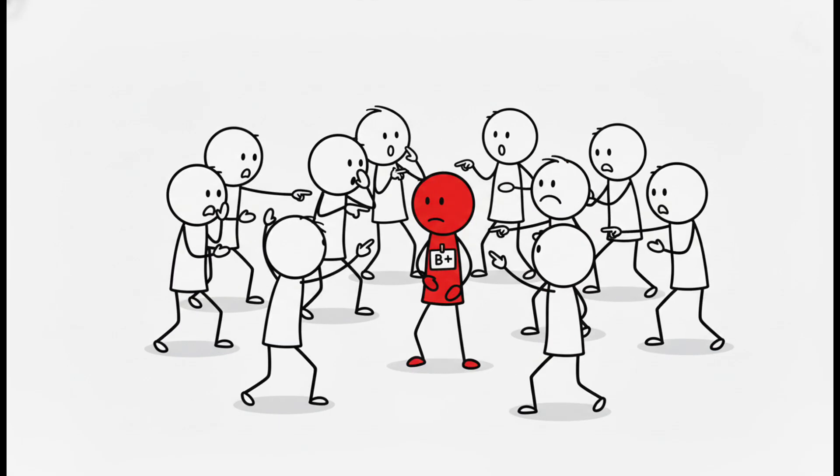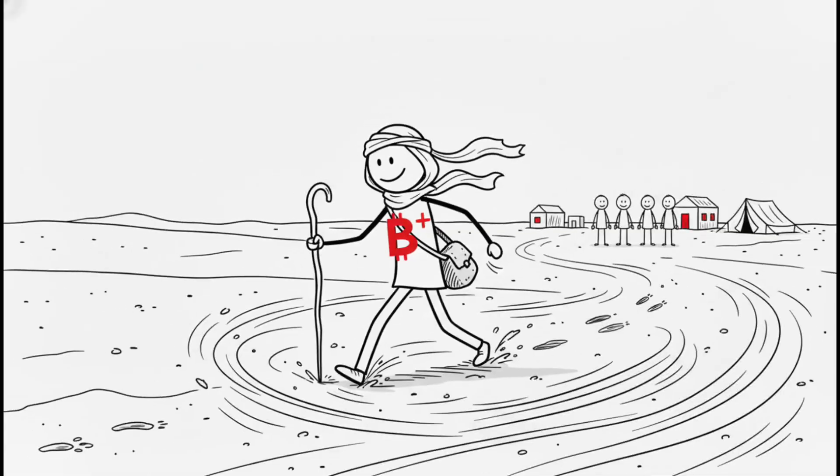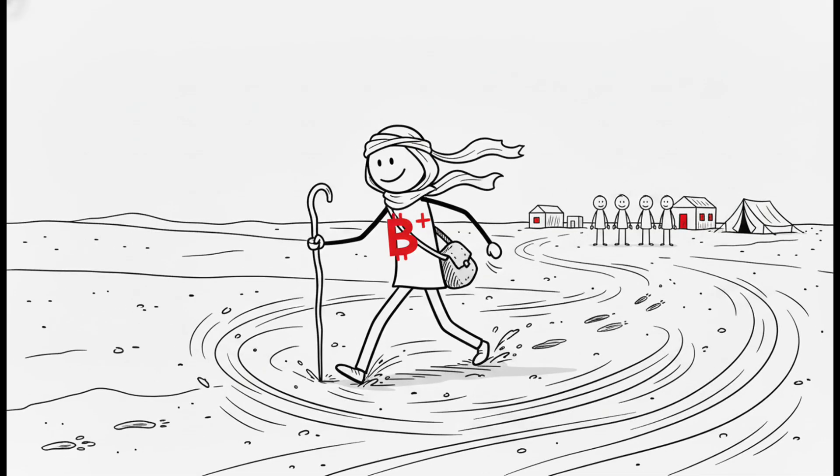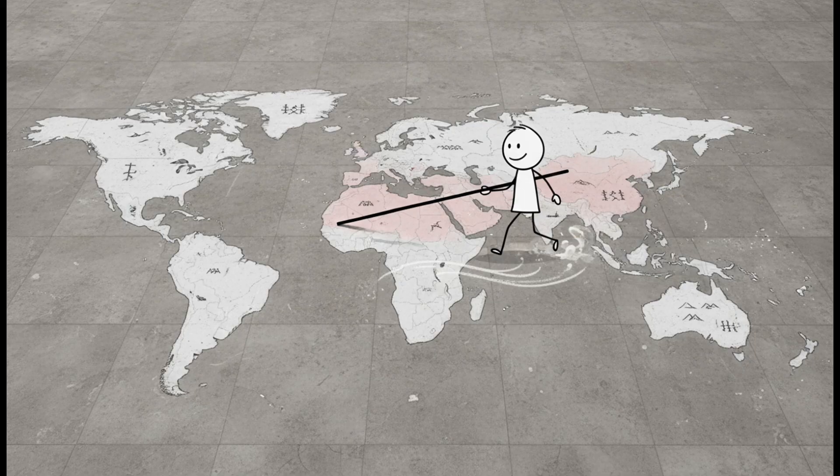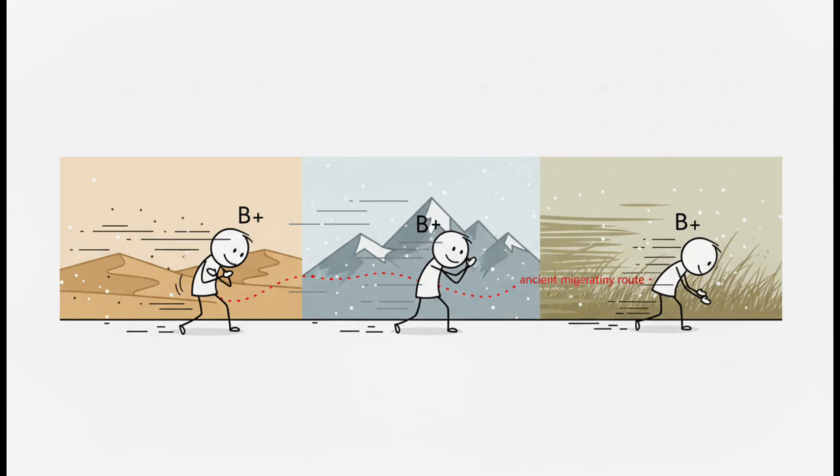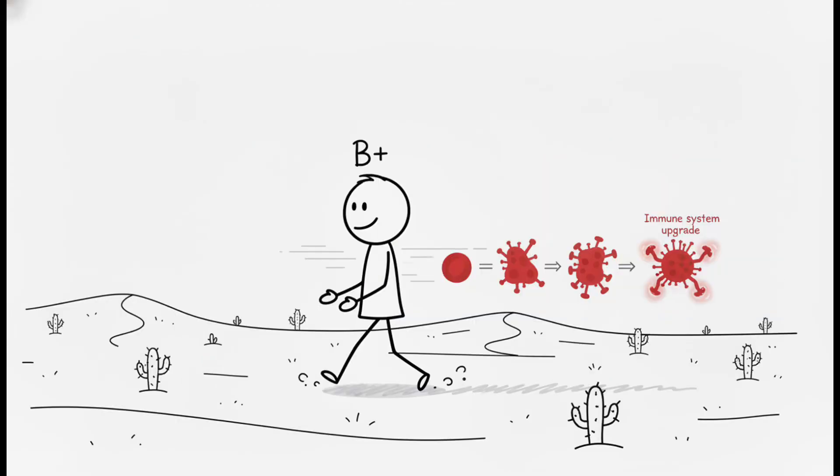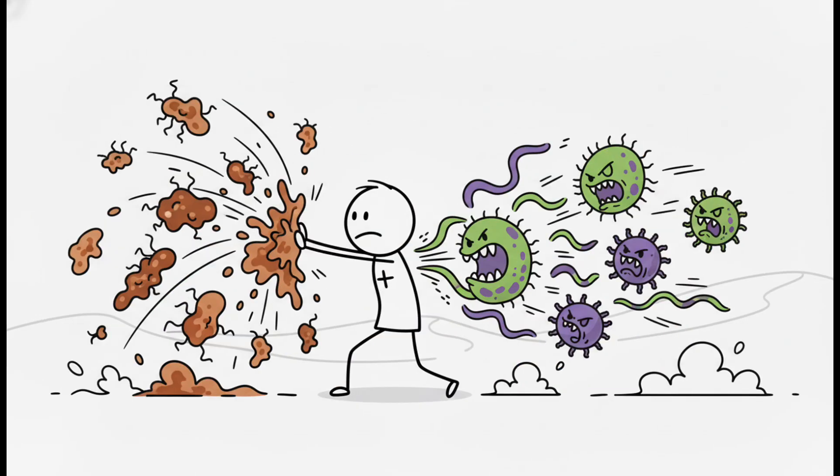B positive. Only 1 in 10 people have B positive. This isn't the blood of settlers, it's the blood of nomads. B positive has the highest concentrations in Central Asia and the Middle East, a genetic fingerprint left by ancient migrations across the harshest environments on Earth. That constant movement shaped a specialist immune system, highly effective against certain bacterial threats, but vulnerable to others.